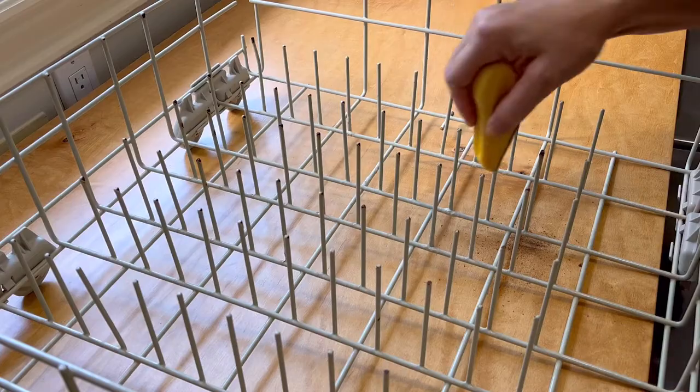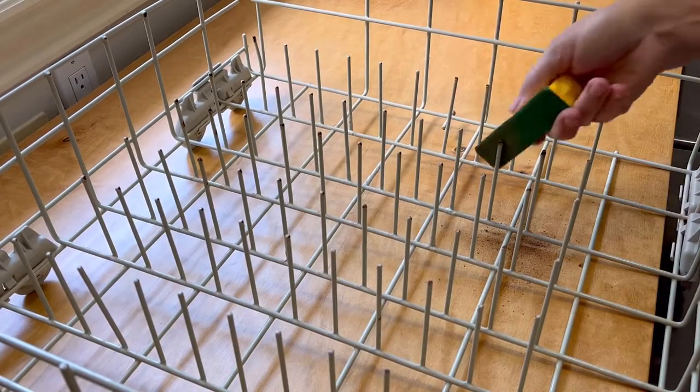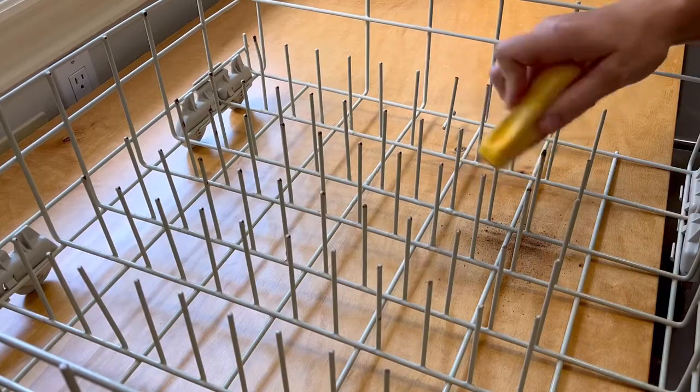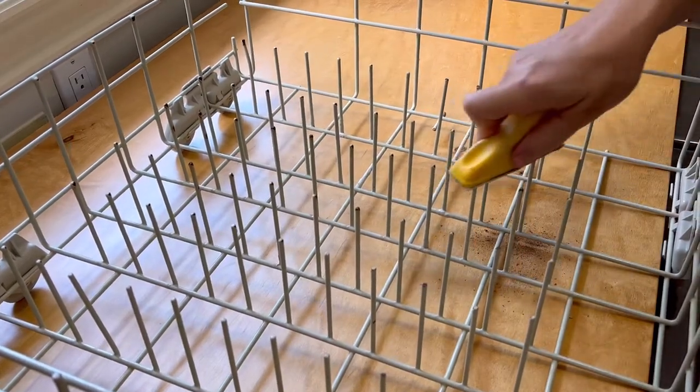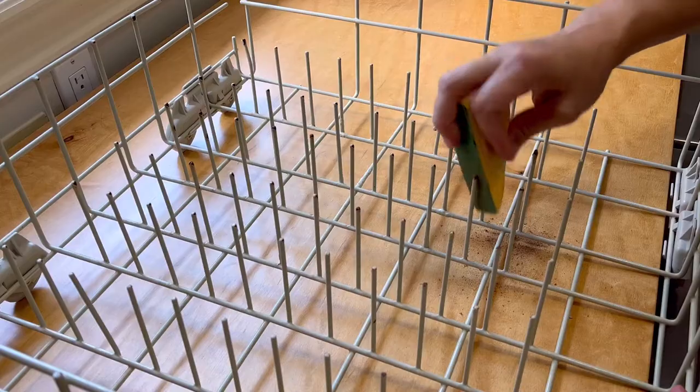If I had really bad rust on my dishwasher tines and I thought I needed to remove some of them, I would probably just replace those racks. Because if you start removing a bunch of tines from your dishwasher rack, it is going to affect the function of your dishwasher and how well it's going to hold the plates and dishes that you're going to be washing.